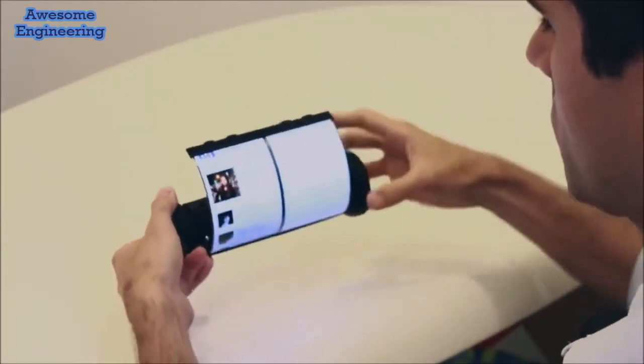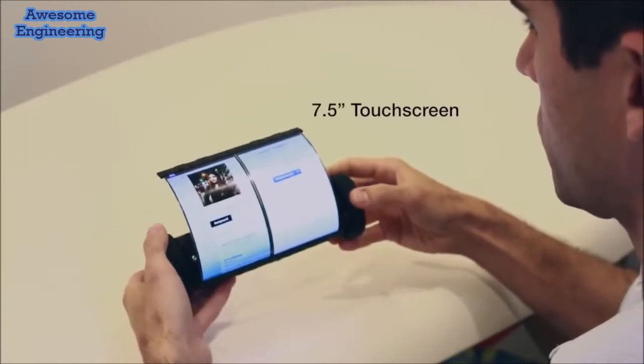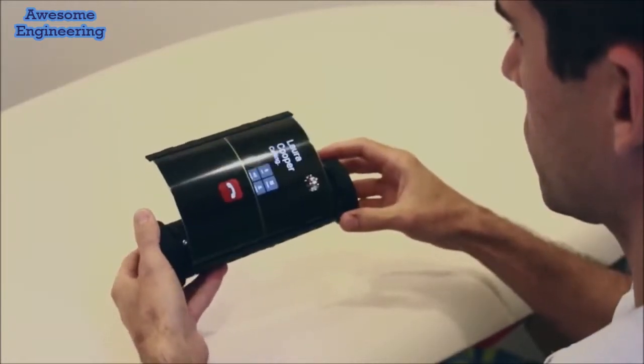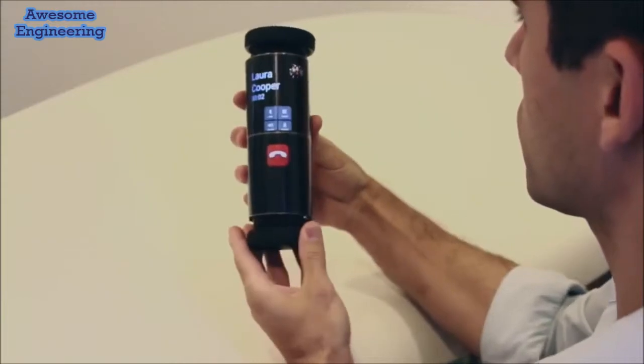When the user has found a contact, he can extend the display to open the link page. The user makes a phone call by touching the screen and rolling up the display to pick up the phone.